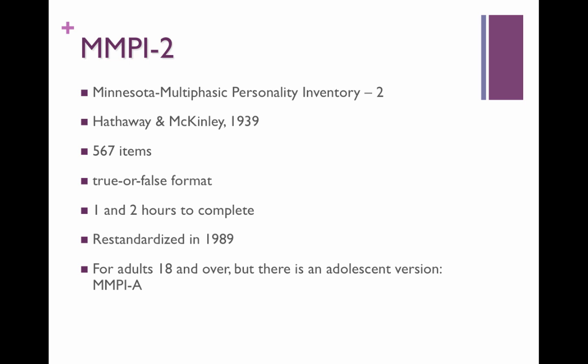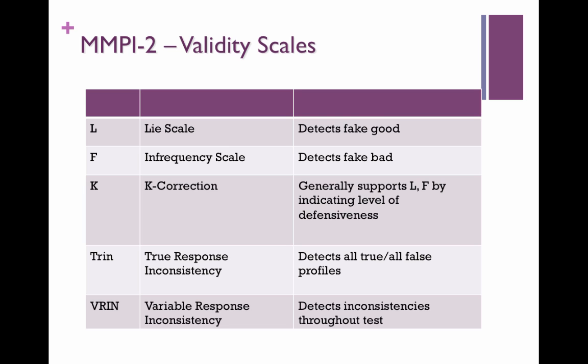It had a massive re-standardization in 1989 where we looked at more current norms. And then there was another revision in the late 90s where the restructured scales came into play. There is an adolescent version called the MMPI-A. This comes in lots of different languages, and you can get it on audio for people who can't read. So it's quite extensive.